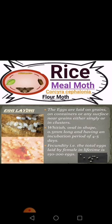The egg is whitish and oval or round in shape, 0.5 mm long, with an incubation period of 4 to 5 days. Fecundity — that is the total eggs laid by a female in its lifetime — is 150 to 200 eggs.